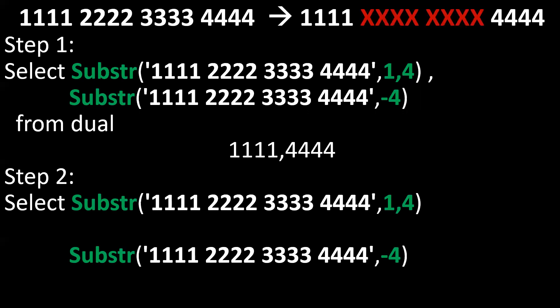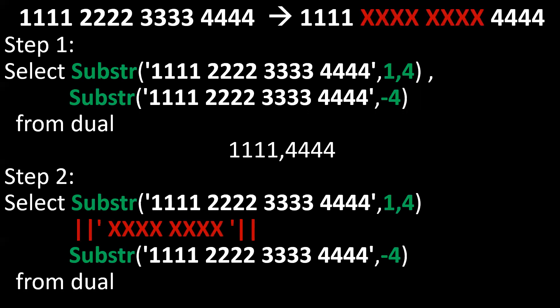So we have these two strings — the first four and last four digits. If we want to combine these two with the masked portion in between, using the pipe symbol we can achieve that. The required output can be obtained using substring and the pipe symbol.